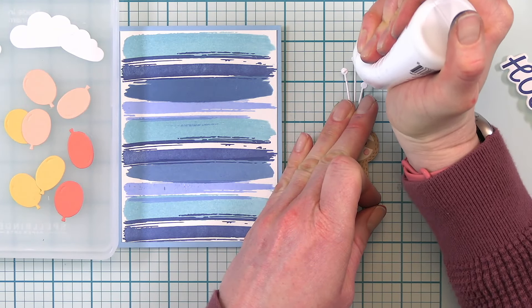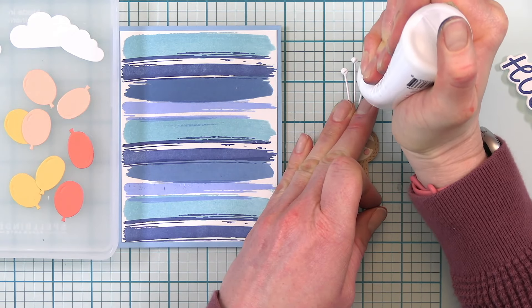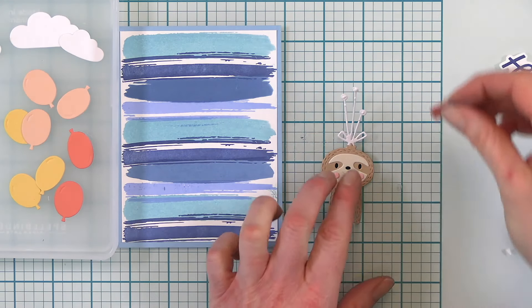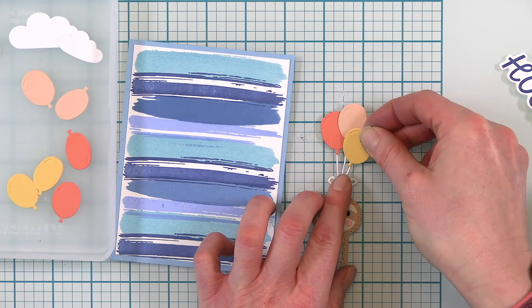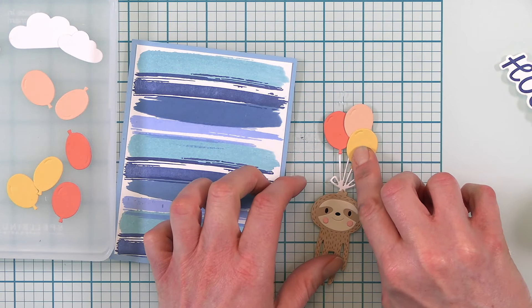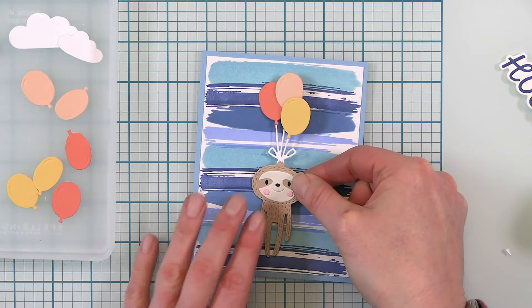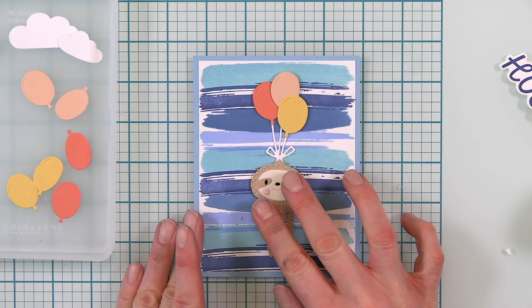Because I have that all blue background I wanted to use some of the warmer hues to add my balloons. So I'm using a coral color, a peachy color, and a nice buttery yellow and that will look really great against that blue background.